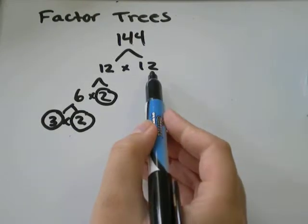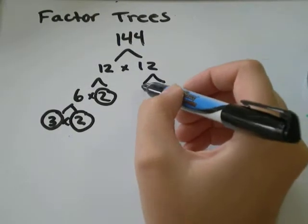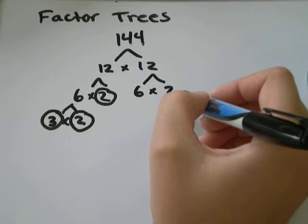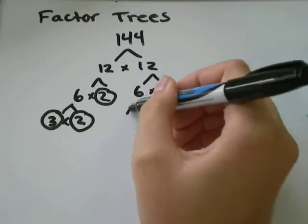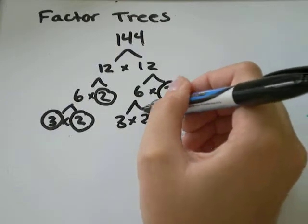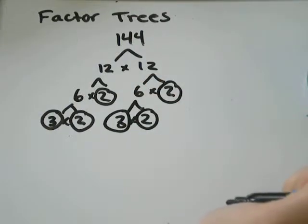So that branch is done. We'll do the same thing over here. 12 is really 6 times 2. You could say it's 3 times 4 if you'd rather do that. 2 is prime, but 6 isn't. It's also 3 times 2. So always circle the end of your branches.